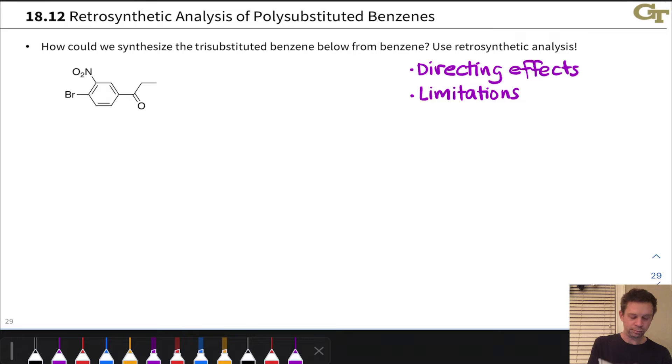Just to take a look at the target here briefly, we have a nitro group and a bromine in a kind of 1-2 orientation, and para to the bromine and meta to the nitro group, we have this acyl substituent or this ketone substituent. So we've got three substituents on this tri-substituted benzene. The first step backward could involve removal, disconnection is the term that's often used, of any of these three substituents.